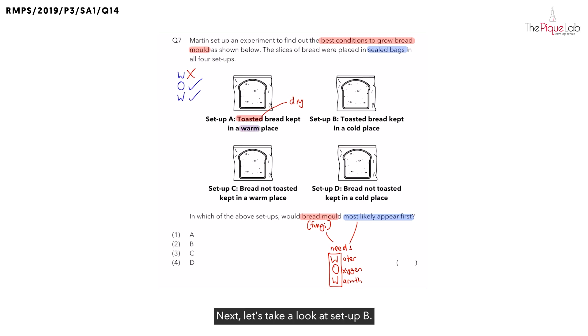Next, let's take a look at setup B. Same thing. I'm going to write the three conditions at the side. Now, does the bread in setup B have water? No. How can you tell? The bread was toasted. And remember, toasted bread means it is dry. So we can cross out for water. Is there oxygen? Yes. There is still oxygen in the bag. And lastly, is there warmth? No. How can you tell? Well, you can see this bread was placed in a cold place. So I can cross out for warmth.